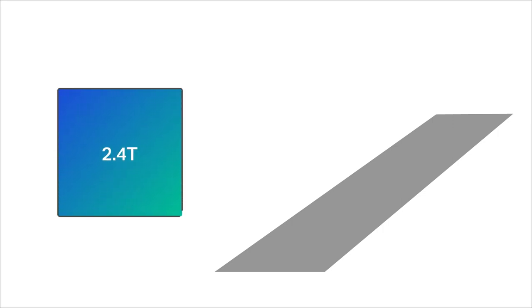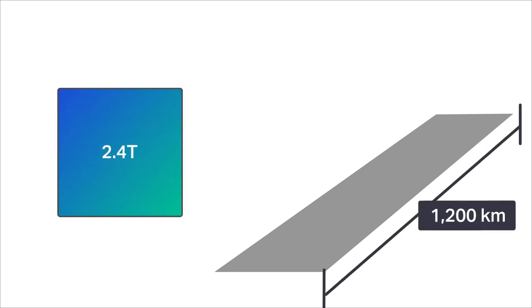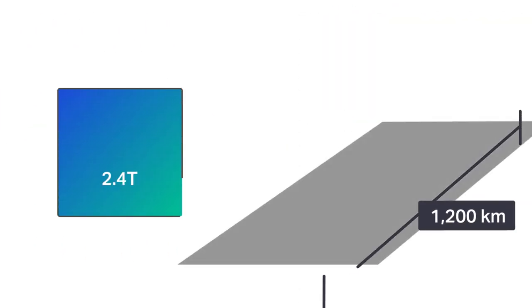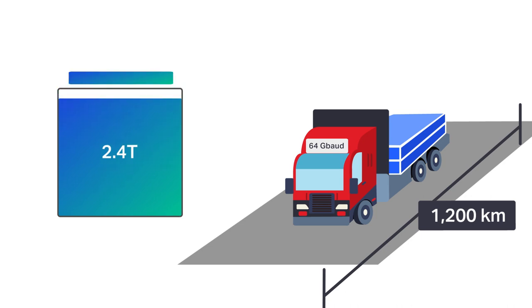Let's bring all the concepts together. Assume you need to carry 2.4 terabits of capacity across 1,200 kilometers, which is a representative long distance link in networks today. There are several choices in modem generations available. You can use a 32 Gbaud modem or a truck that can carry 100 Gb of capacity across this distance. And so now you're going to need 24 trucks. You want to carry more capacity per truck. So you look at a standard 64 Gb modem. Now you can carry 300 Gb capacity per truck. So that means 8 trucks.